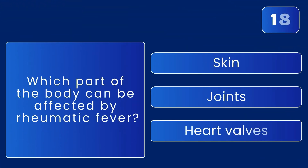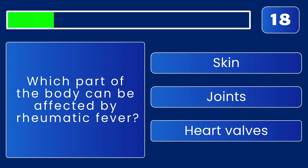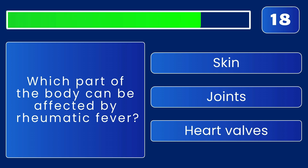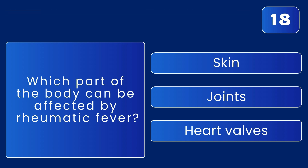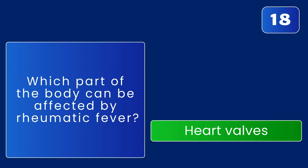Which part of the body can be affected by rheumatic fever? The correct answer is heart valves — it can cause inflammation in joints, skin, and the heart, but the most serious and long-lasting damage is typically to the heart valves.